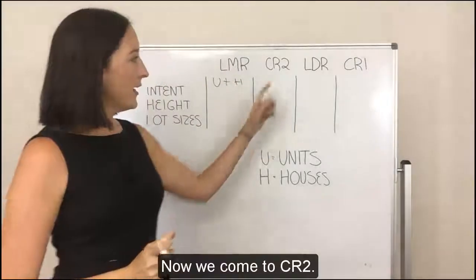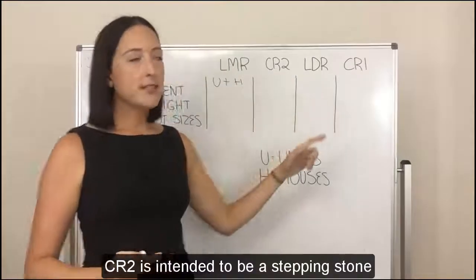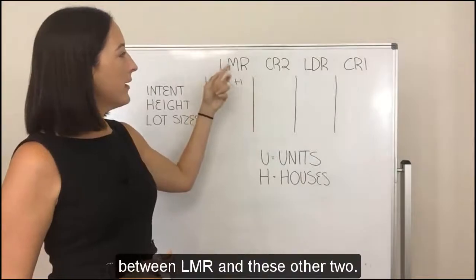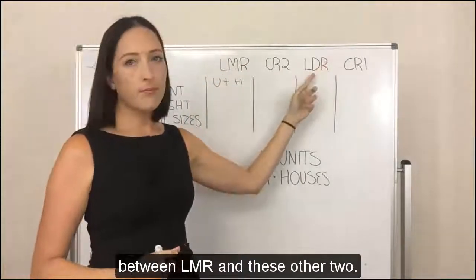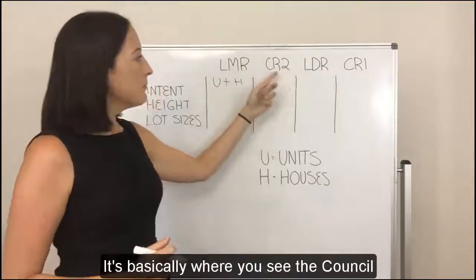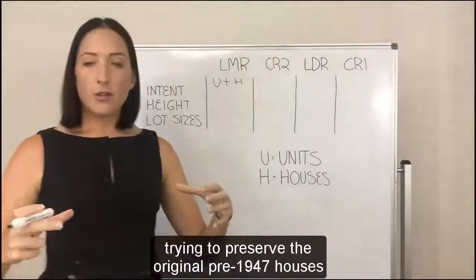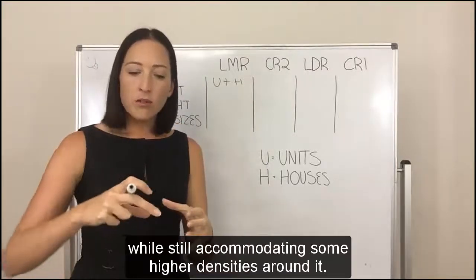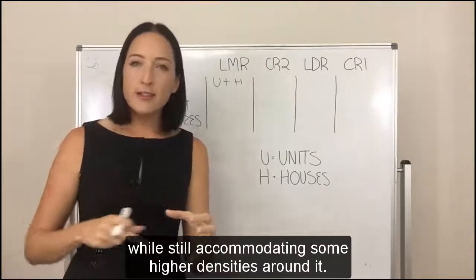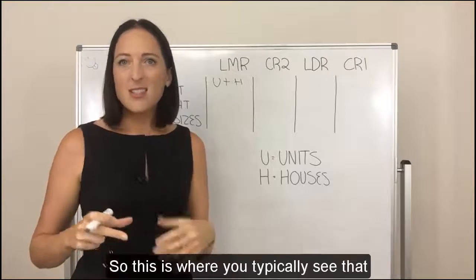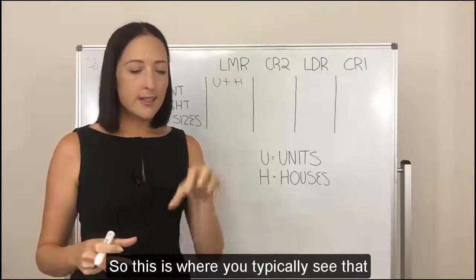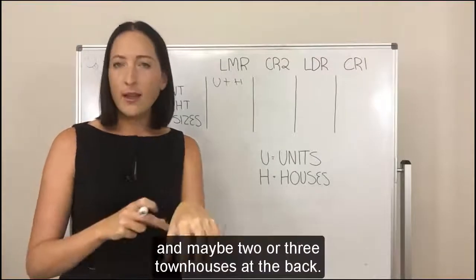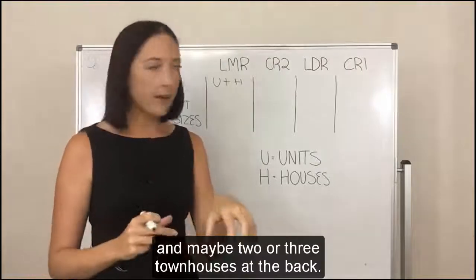Now we come to CR2. CR2 is intended to be a stepping stone between LMR and the other two zones. It's basically where you see council trying to preserve the original pre-1947 houses while still accommodating some higher densities around it.